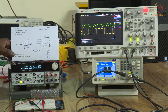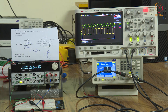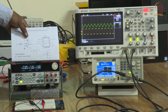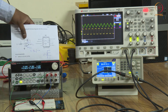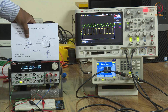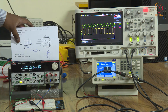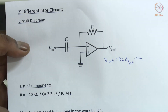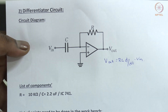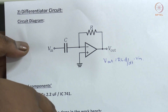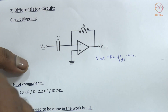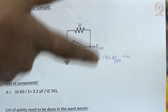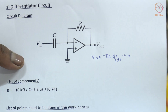We have designed and tested the integrator circuit. Now we will do the differentiator circuit using the same components, but instead of connecting the capacitor in the feedback, we swap: the resistor goes to the feedback and the capacitor goes to the input. The output equation for the differentiator is V_out = −RC × d(V_in)/dt. The resistor and capacitor positions are simply swapped from the integrator circuit.